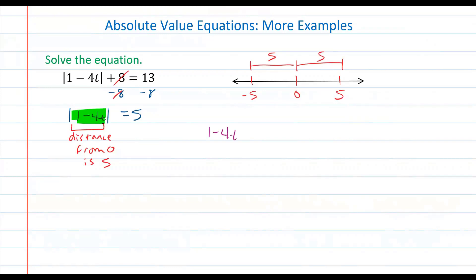In other words, we know that 1 minus 4t is equal to 5, and we know that 1 minus 4t is equal to negative 5, because those two values have a distance of 5 units from 0 on the number line. From here we go ahead and solve both of our linear equations.